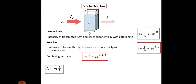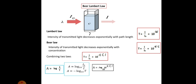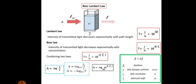Absorbance A is related to transmittance as: A = log(1/T) or A = −log(T). Substituting T = 10^(−εCL) into A = −log(T), we get A = εCL, because log(10^(−εCL)) = εCL. Here A is the absorbance, ε is the molar absorption coefficient with units mol⁻¹ cm⁻¹, C is the molar concentration, and L is the optical path length in centimeters.